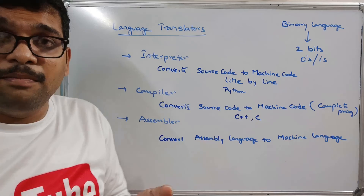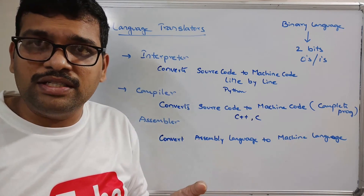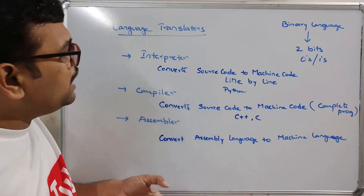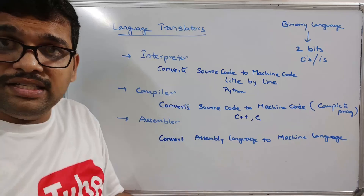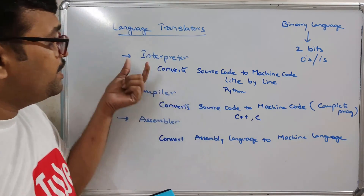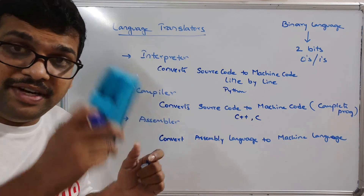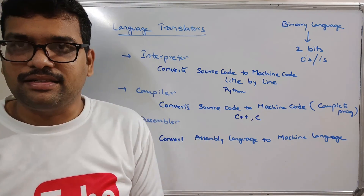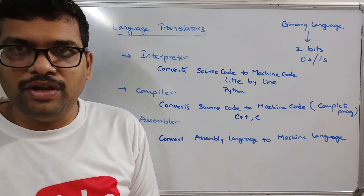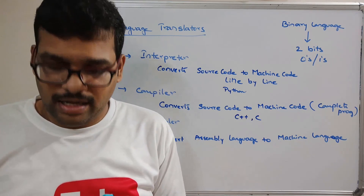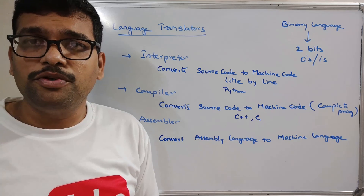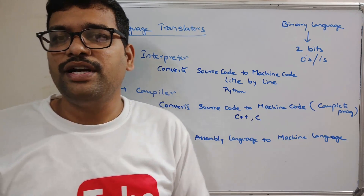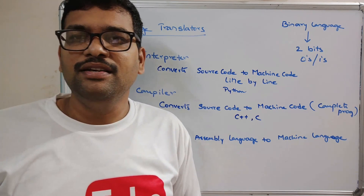We can give instructions using either assembly language or high level language. If you are writing in assembly or high level language, we need to translate it, and those translators are interpreter, compiler, or assembler. If it is a high level language, it can be translated with the help of either an interpreter or a compiler. If it is assembly language, it can be converted using an assembler. In this session we have seen different languages and language translators. Feel free to post your doubts in the comment section, like and share the session, and don't forget to subscribe to our channel. Thank you very much.